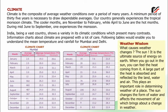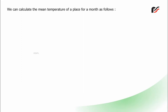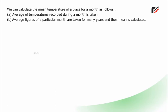What causes weather changes? The sun is the ultimate source of energy on Earth. When you go out in the sun, you can feel the heat coming from it. A large part of the heat is absorbed and reflected by the land, water, and air, which plays an important role in determining the weather of a place. The sun changes the form of water and affects the movement of air, which brings about a change in weather. We can calculate the mean temperature of a place for a month by taking the average of temperatures recorded during a month, then taking the average figures of that month for many years and calculating their mean, and finally deciphering climatic conclusions.